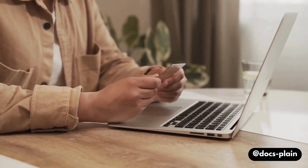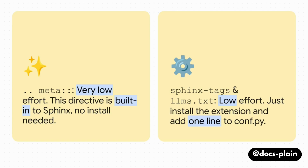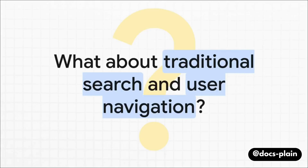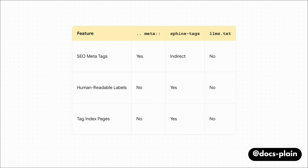But before we dive deep into the AI stuff, let's think about the classic use case — just helping your human users and advanced search engines like Covio. For old-school SEO and Covio-based searches, the meta-directive is the undisputed king: it adds those essential descriptions and keyword tags. For user navigation, Sphinx Tags takes the lead — it creates visible topic labels and tag index pages that people can actually click on. As far as LLMS.txt is concerned, it's not even playing this game because it was never meant for the front-end use case.